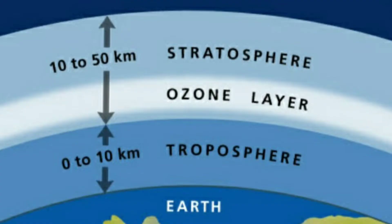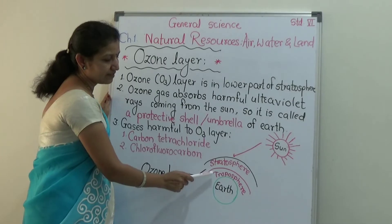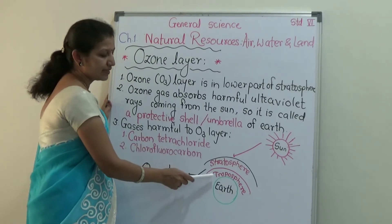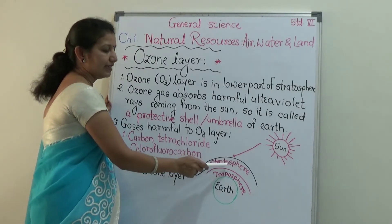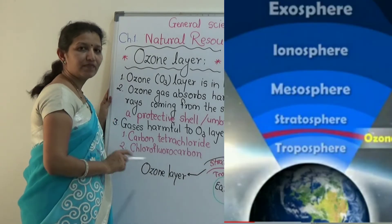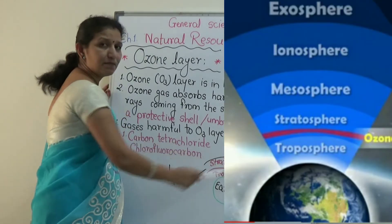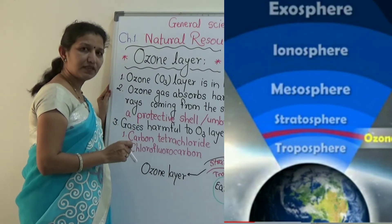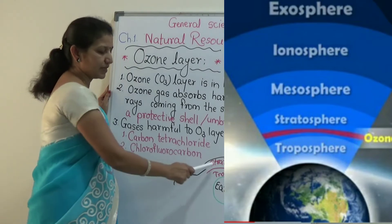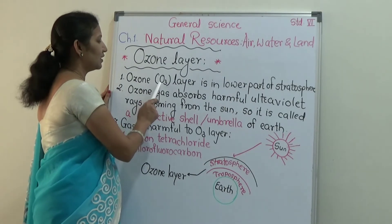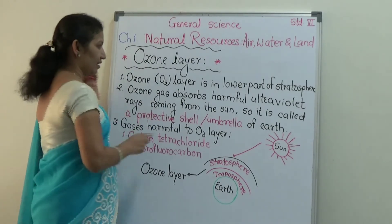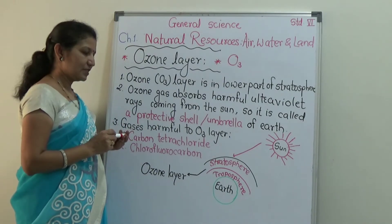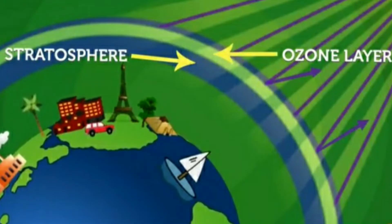The ozone layer is present in the lower part of the stratosphere. Troposphere is the first layer near the earth and constitutes about 80% of gases in the air. Next to troposphere is stratosphere, which comprises 19% of gases in the air. In this stratosphere, the very important ozone layer is present. The molecular formula of ozone is O3.